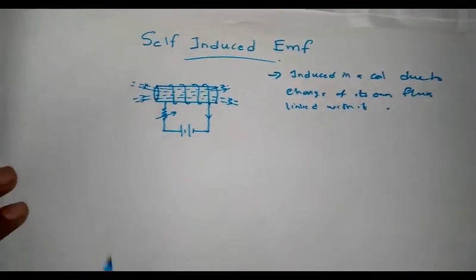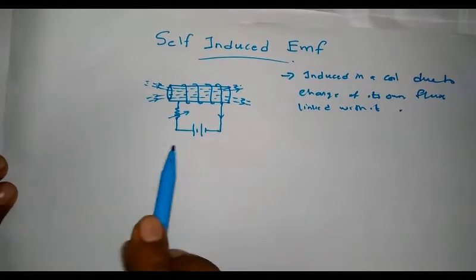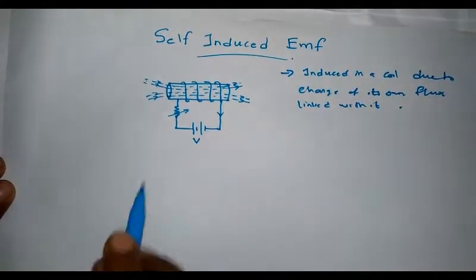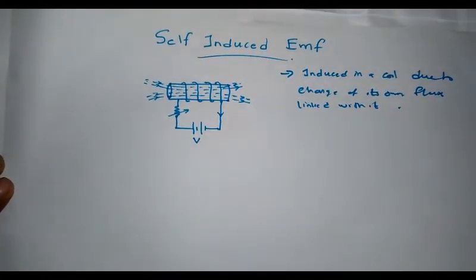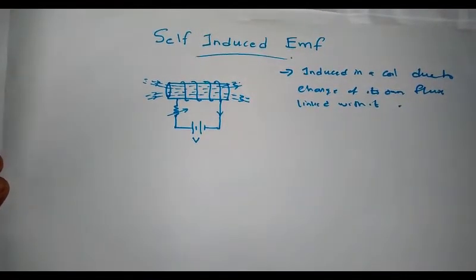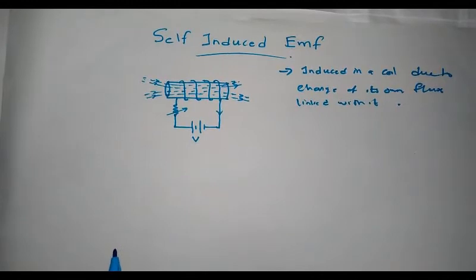Let's consider a simple conductor carrying current, connected to a voltage source V. It is connected to a variable rheostat so that we can vary the current, and it is wound over an iron ring. Let the current I flow through the conductor.